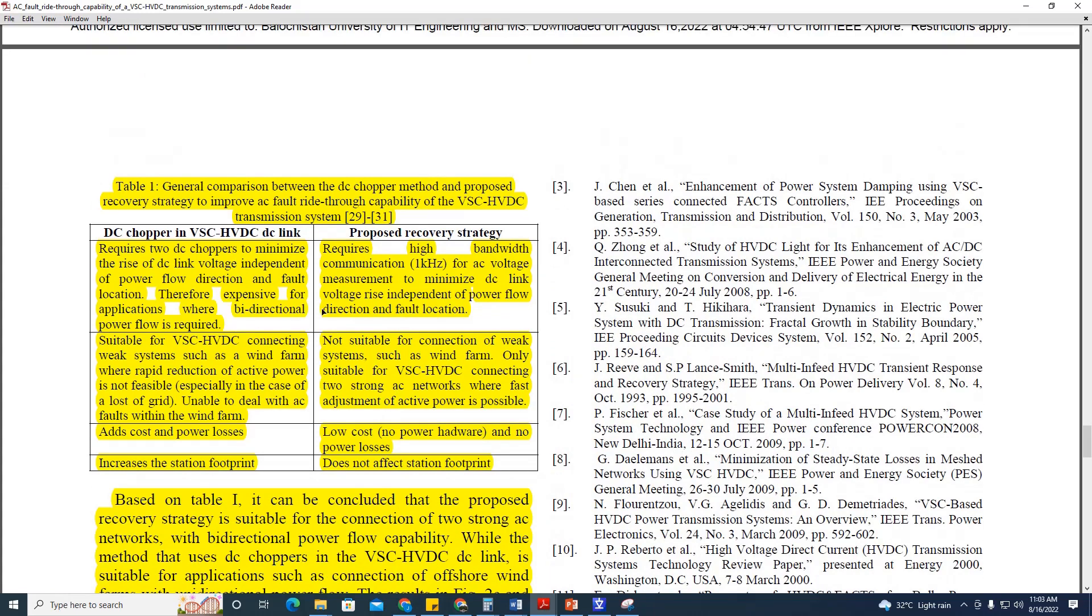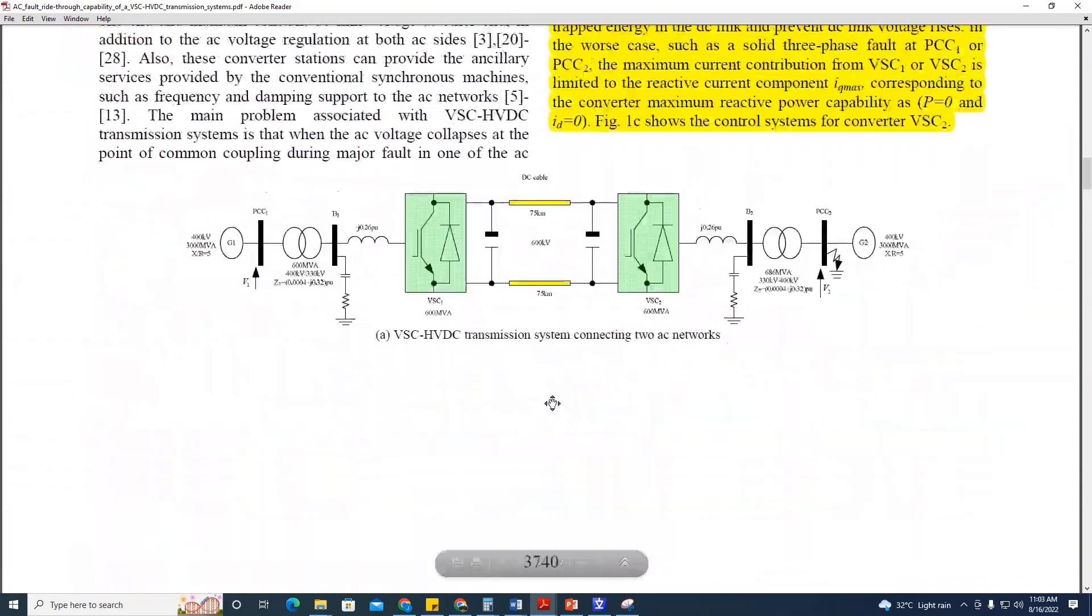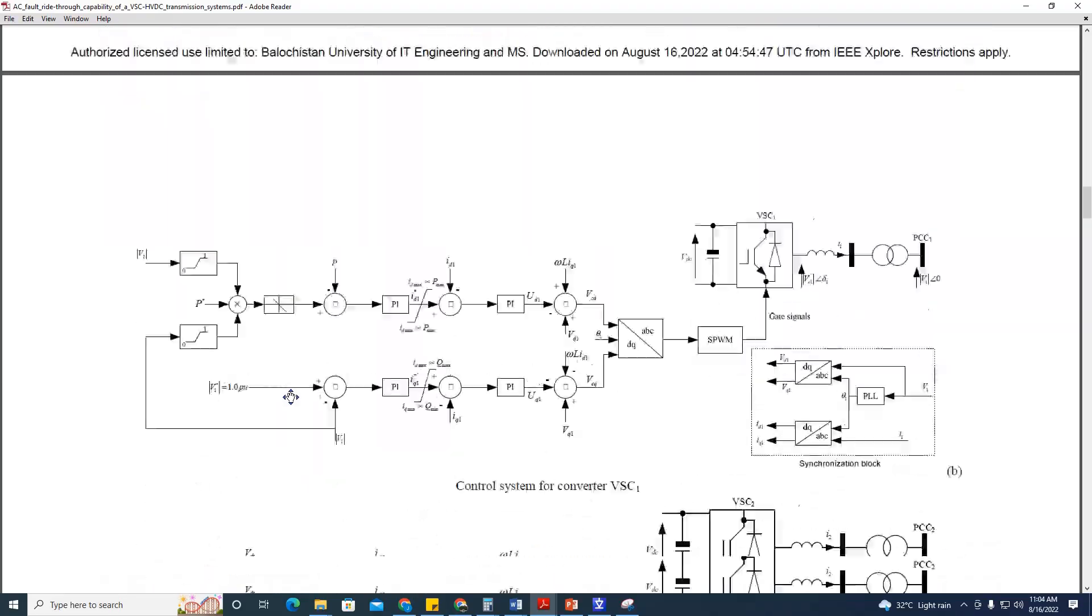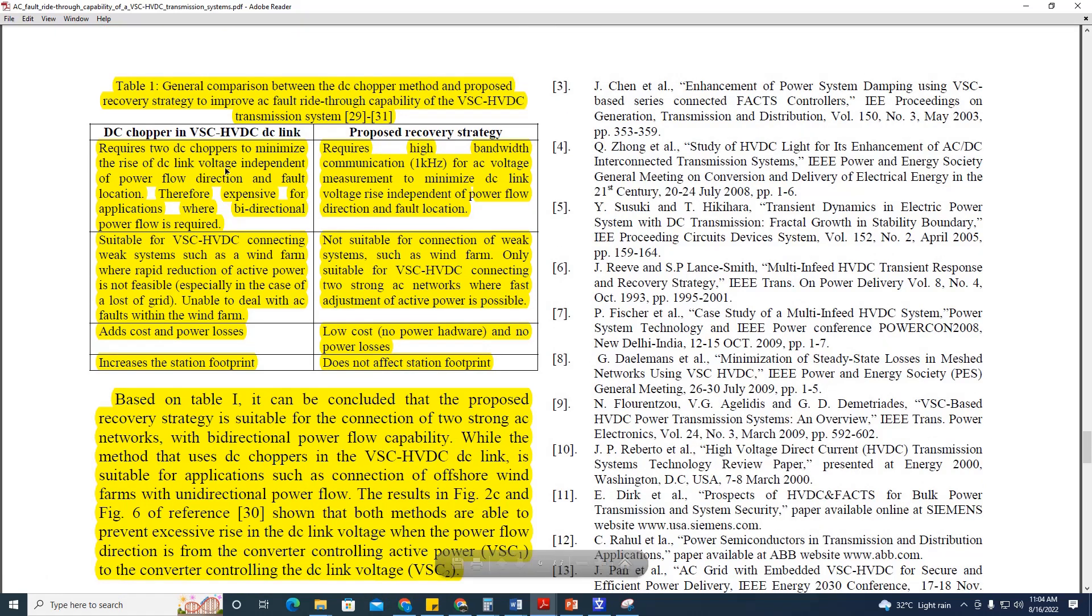If we compare the proposed recovery strategy with DC Chopper, some researchers have proposed DC Chopper. Instead of reducing this surplus power at VSC converter station 1 at point of common coupling 1, some researchers have installed a DC Chopper at the DC link to dissipate that surplus power. This is another way to overcome that issue and this is another fault ride-through technique. But including a DC Chopper adds more cost to the system and it will increase the footprint of the converter. Power losses will certainly increase.